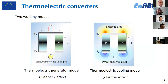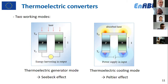For thermoelectric converters there are two main working modes. The first is based on the Seebeck effect — the thermoelectric generator mode — where a temperature difference is applied across the device, generating a current and power. The second is the thermoelectric cooling mode, which uses the Peltier effect: you supply the device and create a temperature difference between the two sides.